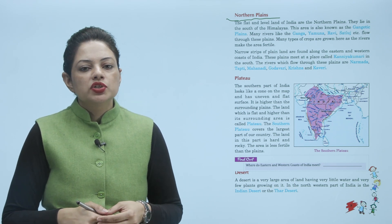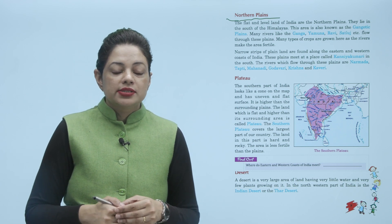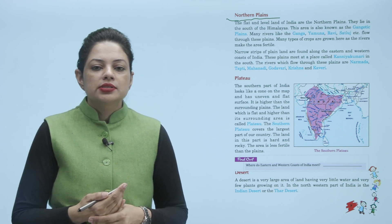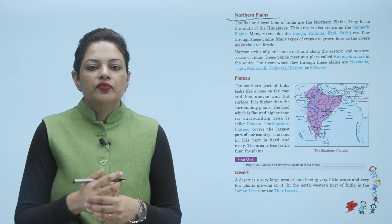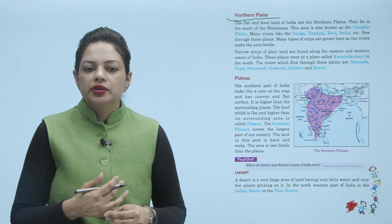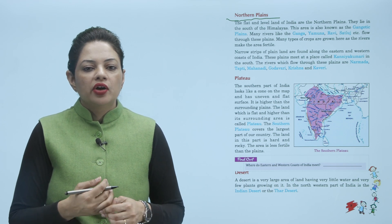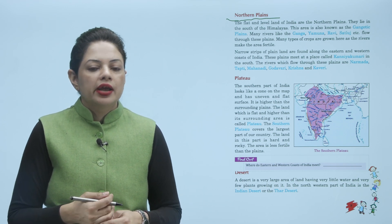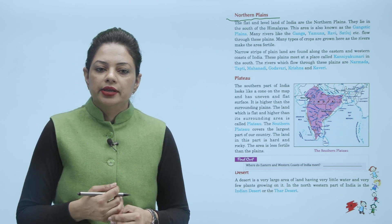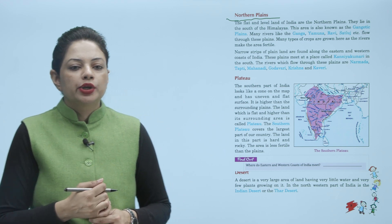The rivers which flow through the southern plains are Narmada, Tapti, Mahanadi, Godavari, Krishna, and Kaveri. Now let us talk about plateaus.